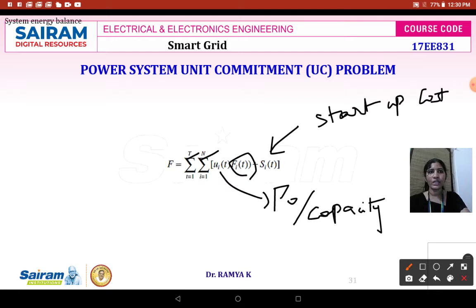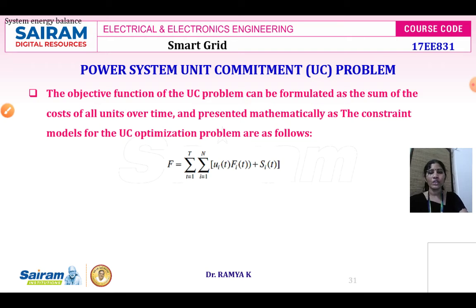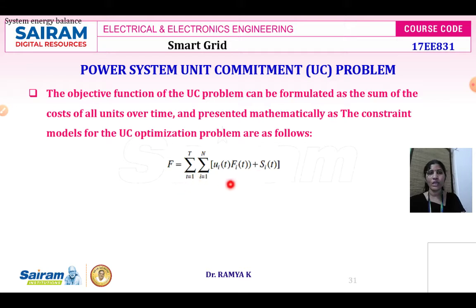Therefore the objective of your unit commitment problem can be formulated as a sum of cost of all units over time, and it can be presented mathematically as a constraint model for the UC optimization problem.